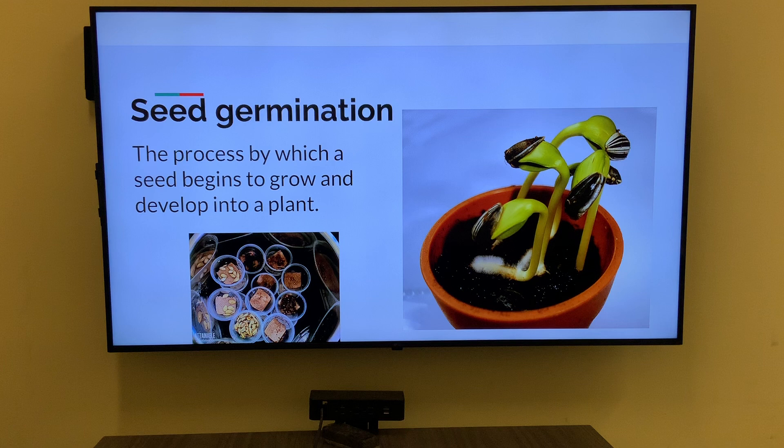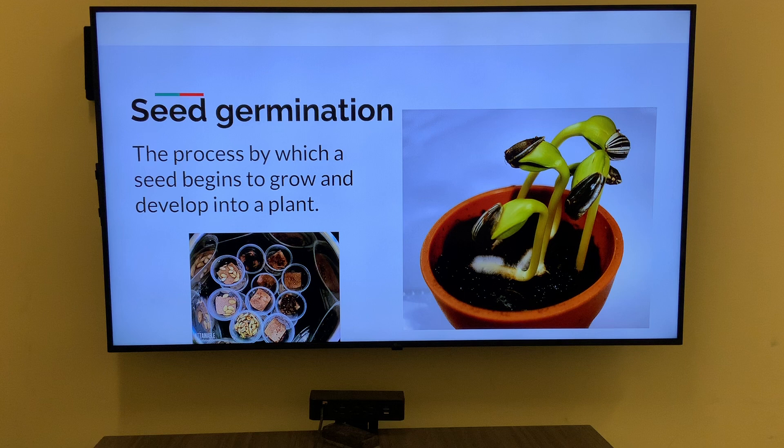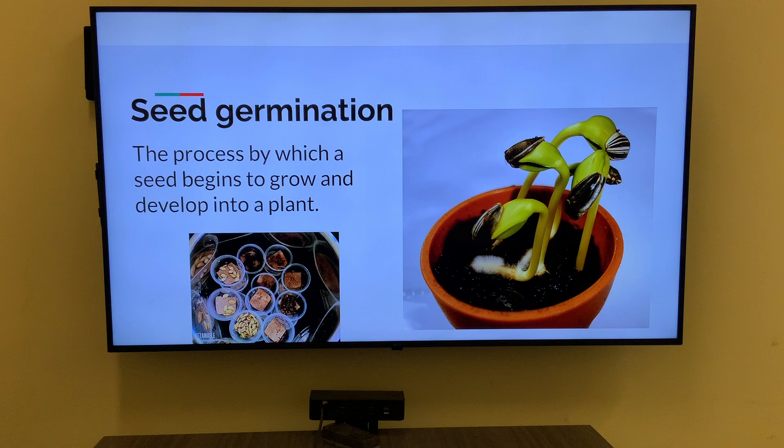Germination is a critical stage in the life cycle of many plants as it determines whether or not the seed will successfully establish and grow into a viable plant. It is a process by which a seed begins to grow and develop into a plant. During germination, the seed absorbs water and begins to break down stored food reserves in order to support the growth of the developing embryo.